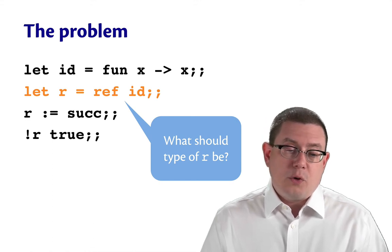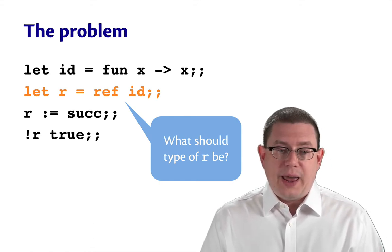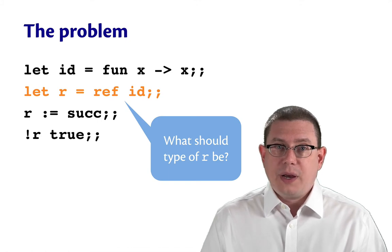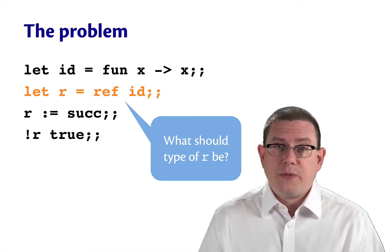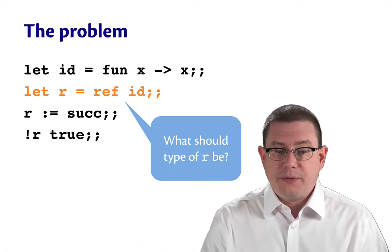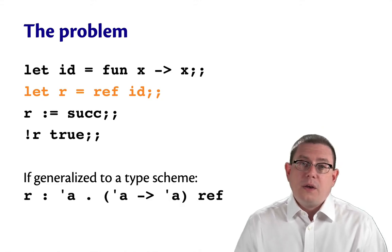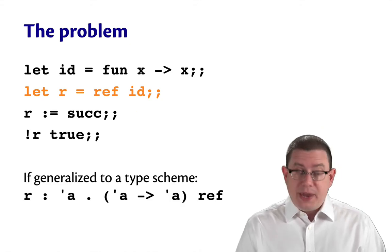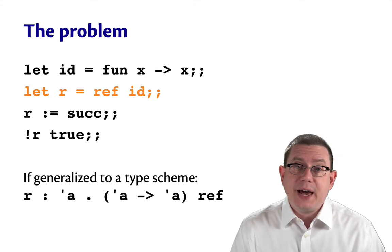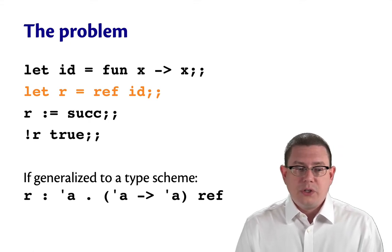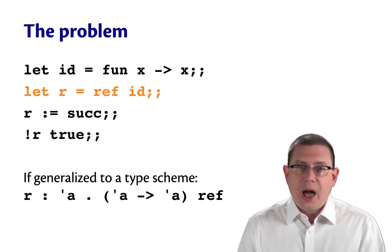Let's focus in on the second line. What should the type of the reference r be there? Well, you might initially think it should be an alpha arrow alpha ref because it's a reference to a polymorphic function that takes in an alpha and returns an alpha. Okay, we know now from type inference that we would generalize that to a type scheme. So r would get generalized to alpha dot alpha arrow alpha ref.